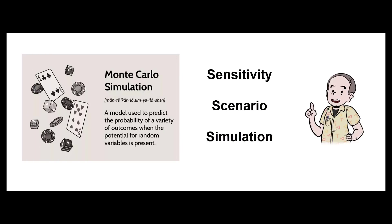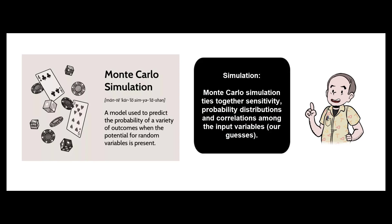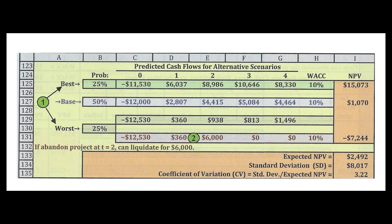There's also simulation: we establish a range for important variables and use the random function in Excel or Google Sheets to generate many random scenarios with different combinations of key factors, then observe the resulting distribution of net present values.